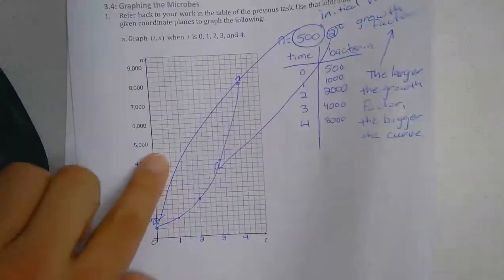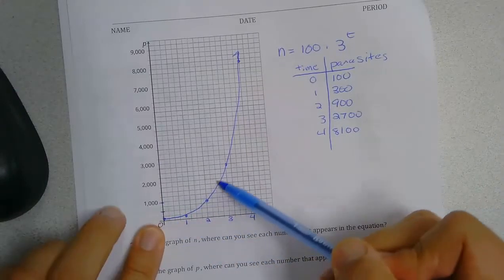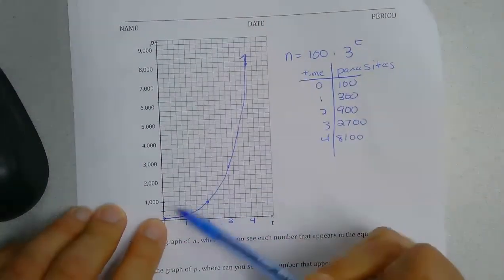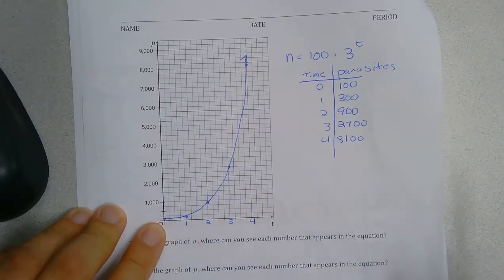So if you notice here, we had a larger growth factor, and we had a steeper curve. After just 4 hours, the amount of bacteria was almost equal, whereas this started at 100.